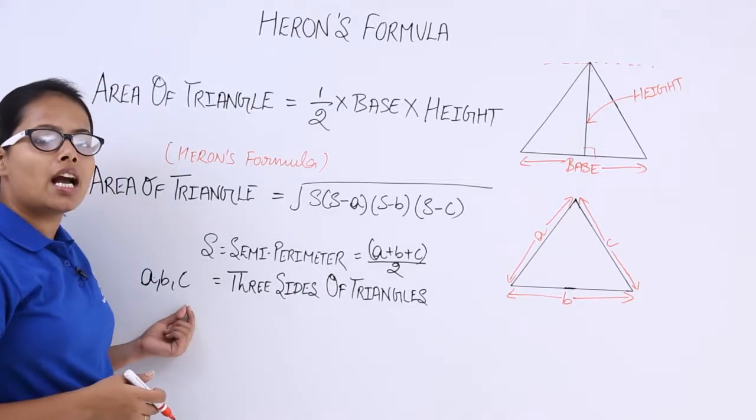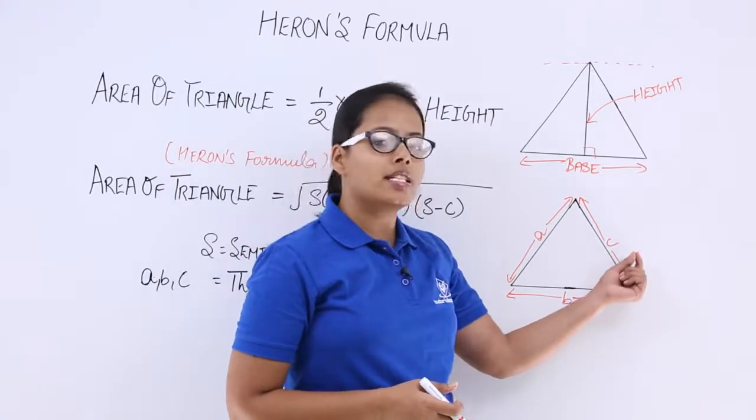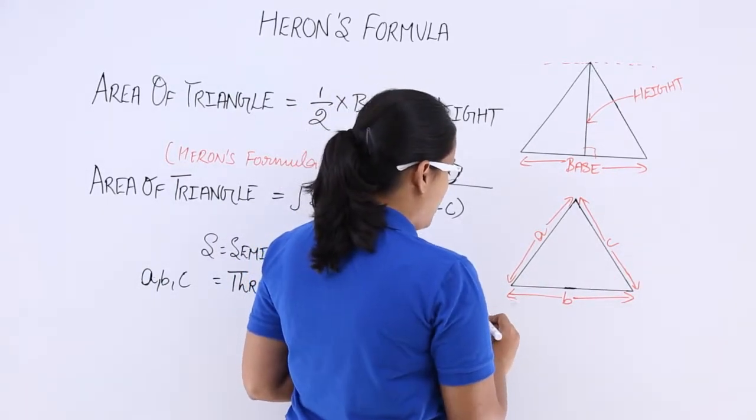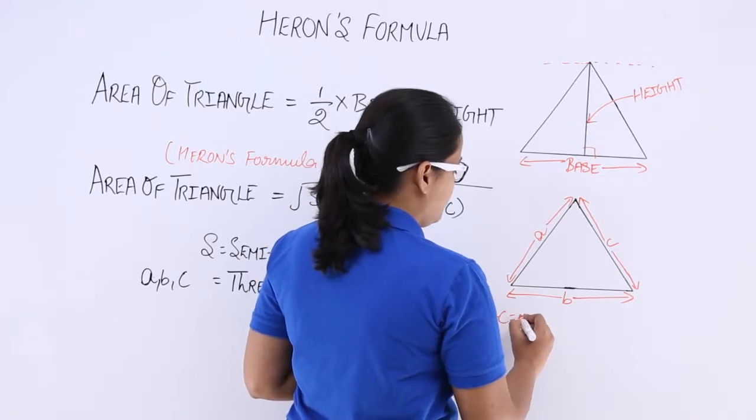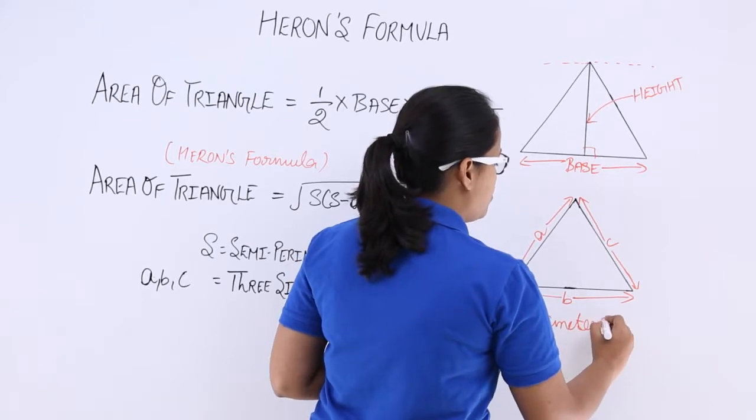And what are A, B, C? These are the three sides of a triangle. You can see here, this is A, B, C. And sum of A plus B plus C will give you perimeter. This is nothing but perimeter of this triangle.